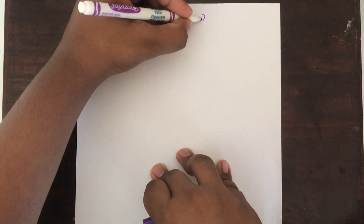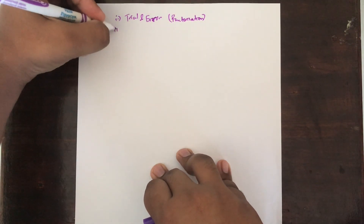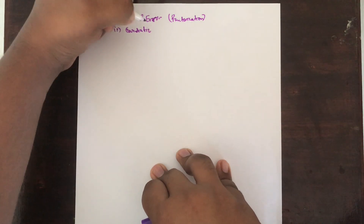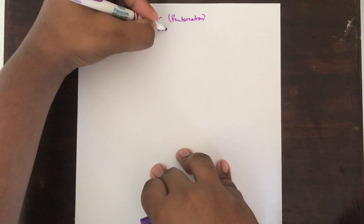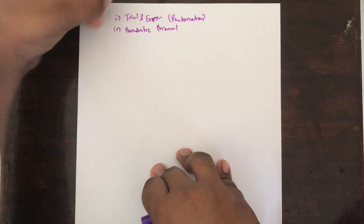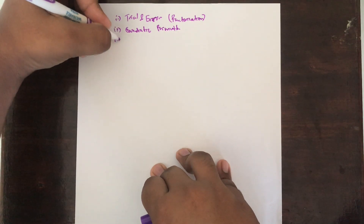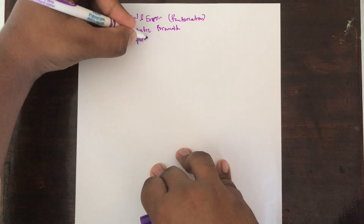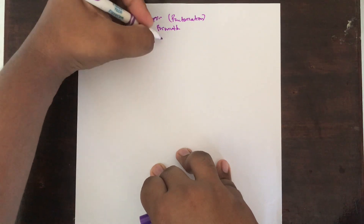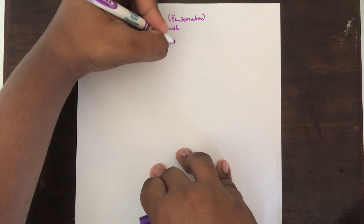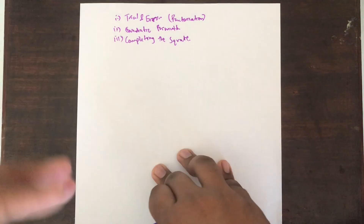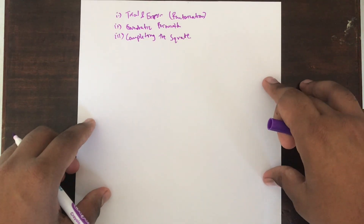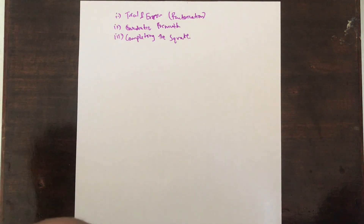The second one is the quadratic formula — there is a formula that is used to solve quadratic equations. The third one is completing the square. We are going to cover all 3 in much more detail, and then you will be able to solve any type of quadratic equation using any of these 3 methods.